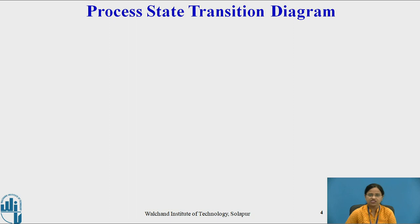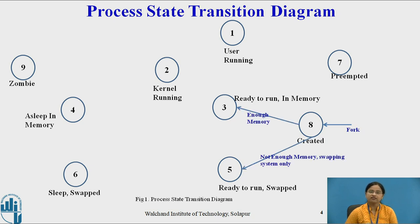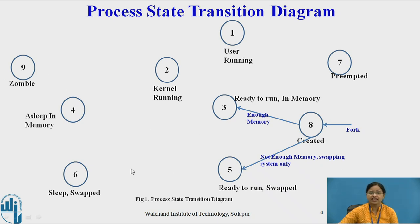Now let us see the process state transition diagram. There are a total of 9 states. Initially, the process is created using the fork system call — that is state 8. The process may then enter state 3 or state 5, both of which are ready-to-run states, but state 3 is ready to run in memory. The process enters state 3 if there is enough memory available, or state 5 if there is not enough memory. Considering that the process enters state 3, the kernel schedules it and the process enters kernel running mode where it completes its fork system call.